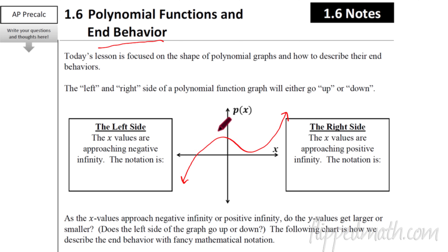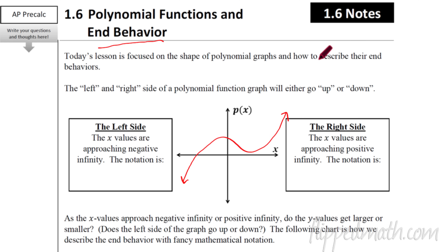If I go to the left a very far distance, then looking at this specific function that we'll call P of X, I realize by looking at it that it's going to go down. The further left I go, the further down this function is going to go. If I go to negative 1,000, it's going to be pretty low. If I go to negative 1 million, even lower. Then I can look at the right-hand side and say, as X increases, this is getting higher and higher. If I go out to 1,000, it's going to be pretty high. If I go out to a million, even higher. End behavior is describing what happens to the polynomial function on the very far left side and the very far right side.